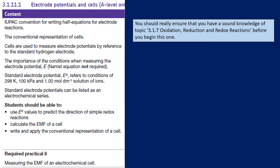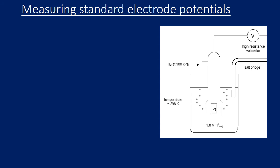We're going to focus on standard electrode potentials and what the standard hydrogen electrode is. The term 'standard' means we are comparing something to a reference point — a standard that things are measured against. The electrode we compare things to is the standard hydrogen electrode, often abbreviated to SHE. We've already looked at cell representation and half-cell equations, so let's look at how we measure the standard electrode potential of a substance.